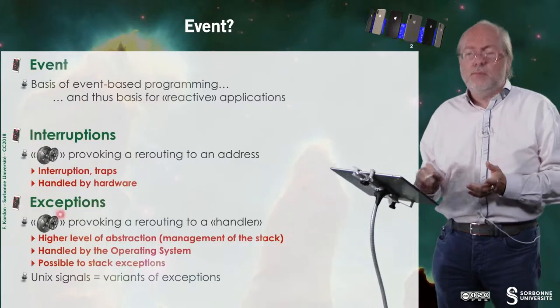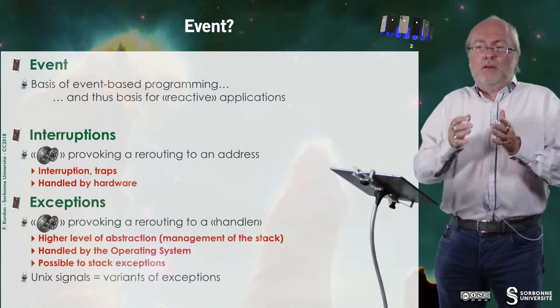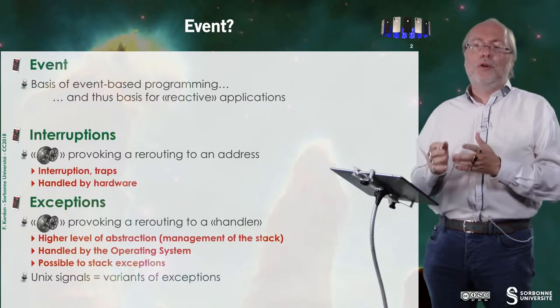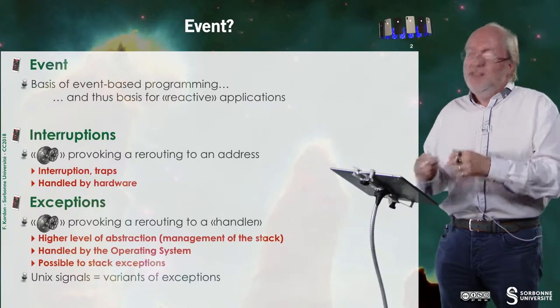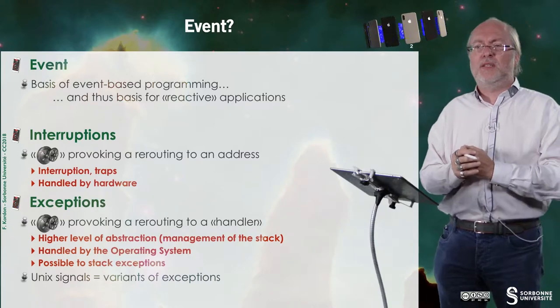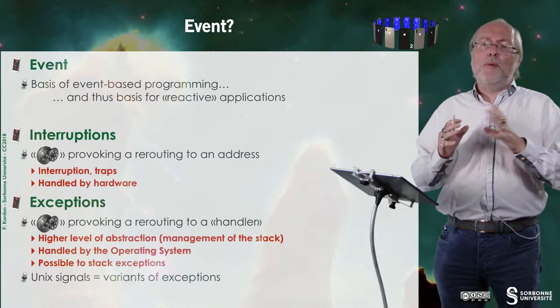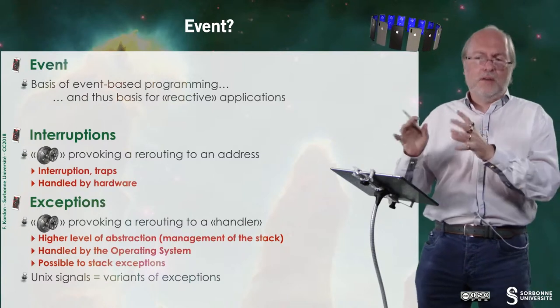An exception is at a higher level because it's also a mechanism that provokes the rerouting of the execution of a program to what we call a handler. The handler is basically represented by an address, but not only that. It's a higher level of abstraction compared to interruptions because, since it's managed in software, you can stack several exceptions, while it's usually more difficult at the hardware level for interruptions. Usually it's mostly handled by the operating system or via operating system mechanisms, and you have to know that Unix signals are a variant of exceptions.